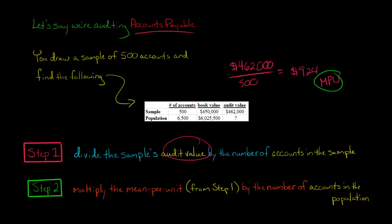Okay, so the number of accounts, so we took $462,000 divided by 500 to get the mean per unit for the sample. And then now we're just going to extrapolate that by multiplying it by 6,500. So we take $924 times, let me write it down here. So here I'll put 924 times 6,500, and that's going to come out to $6,006,000.